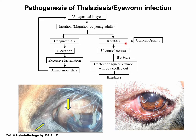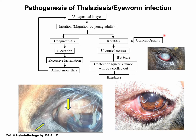Due to keratitis followed by ulceration of the cornea, if the corneal layer tears, blindness will result. Keratitis may also lead to corneal opacity.